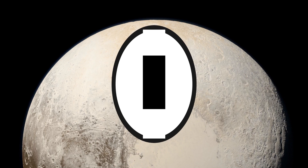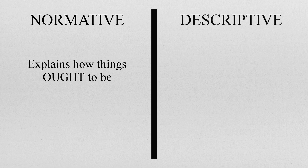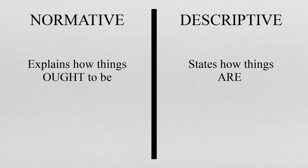Utilitarianism is canonically thought to be a normative theory — that is, a moral theory that tells us how we ought to act. But some can also view utilitarianism as a descriptive theory of morality — that is, as a theory that describes how we act, explaining the state of affairs regarding morality.